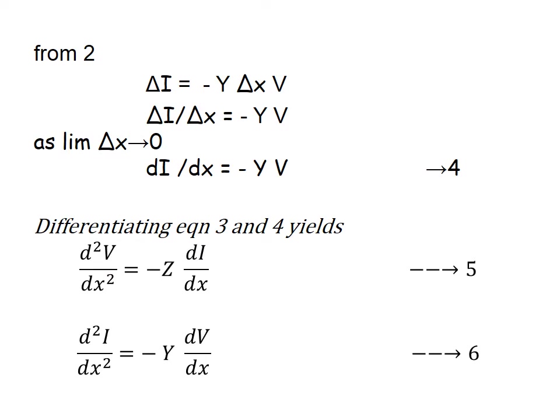Similarly from equation 2, ΔI = −(G + jωC)·Δx·V. Replacing (G + jωC) with Y and taking Δx to the other side, as Δx tends to zero it becomes a differential element, giving dI/dx = −YV, where Y is the shunt admittance.